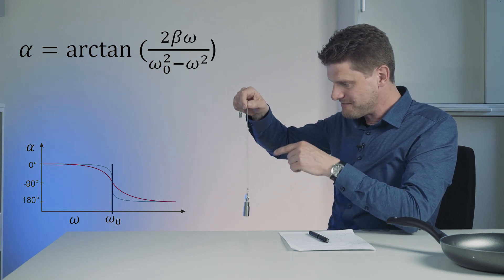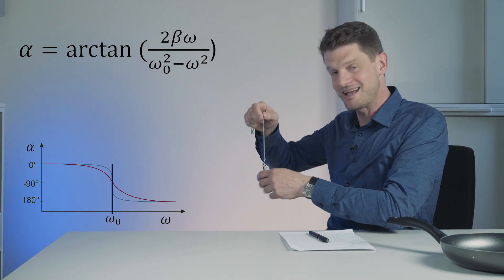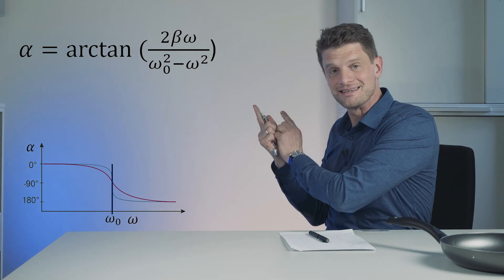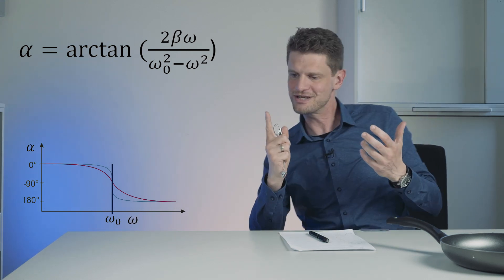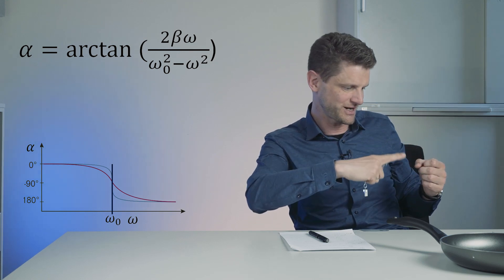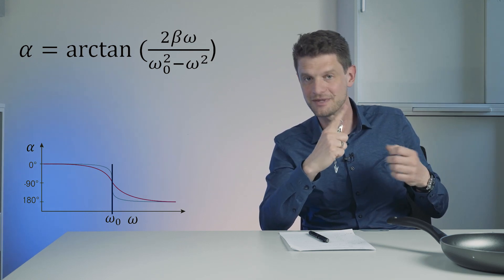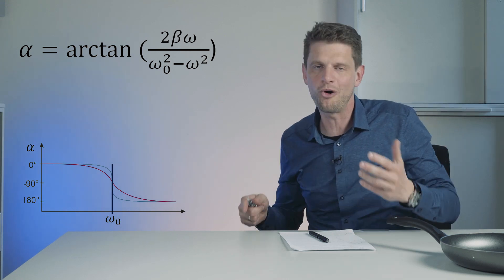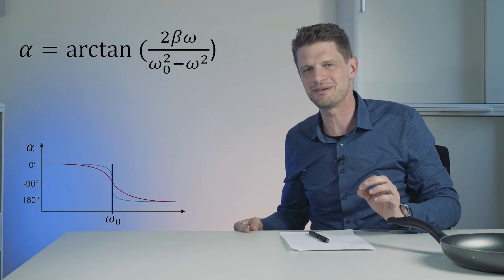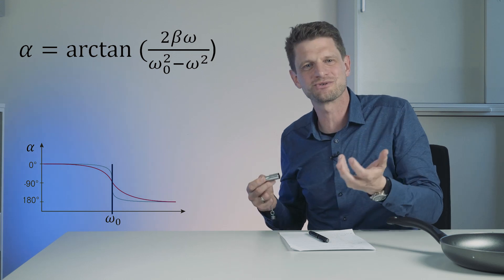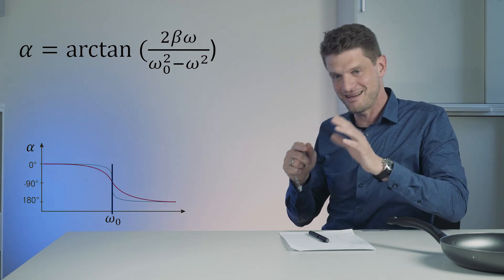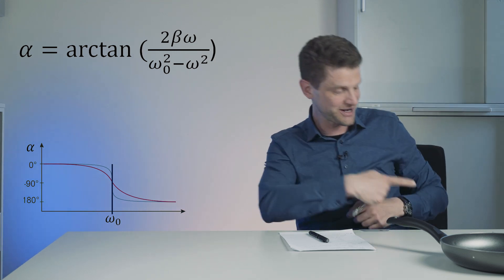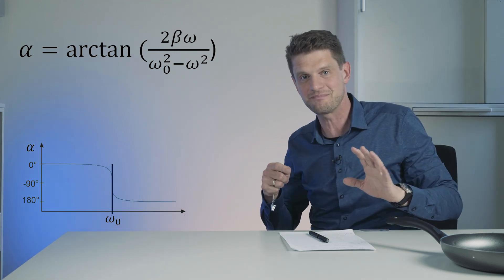If we are above the eigenfrequency, then the lower term will be minus and arcus tangens will give us something between 90 and 180 degree, depending on beta. But if beta is zero, almost zero, there's almost no damping. A little bit damping is always there, some air is also damping. Then there will be just a flip over from 0 to 180 degree with no damping.